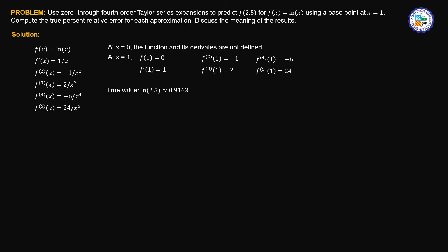Let's present the true value of ln of 2.5 using a calculator. So ln of 2.5 is actually equal to 0.9163. Then we'll compare this with our approximation. Let's write the Taylor series expansion for f of x equals ln of x.